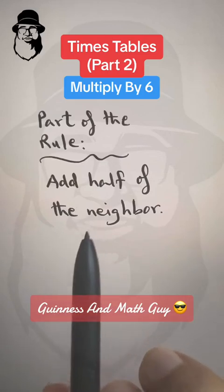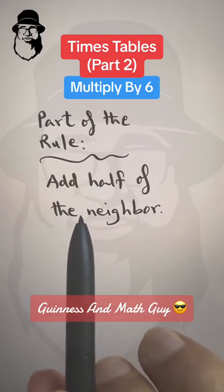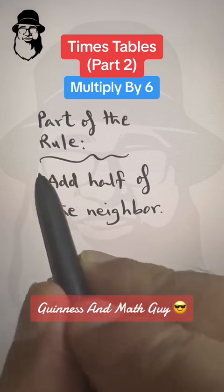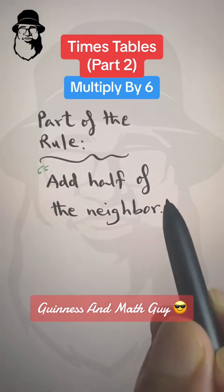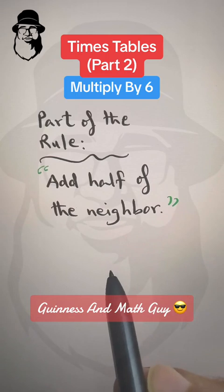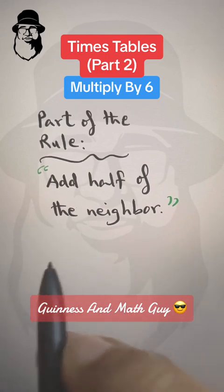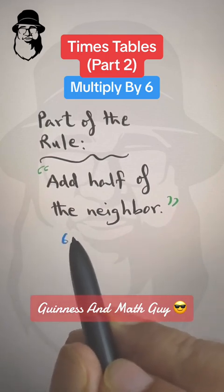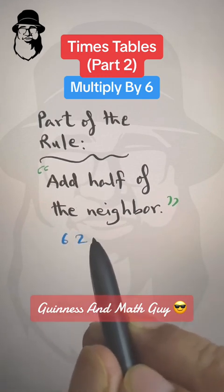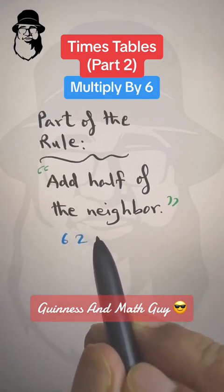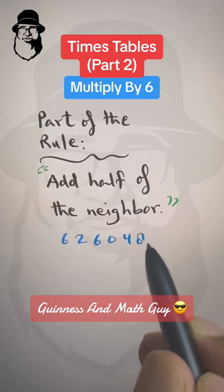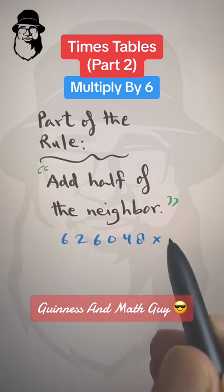The rule for multiplying by 6 — or at least part of the rule — is: add half of the neighbor. That's it. So let's say we want to multiply 6,462,048 by 6.